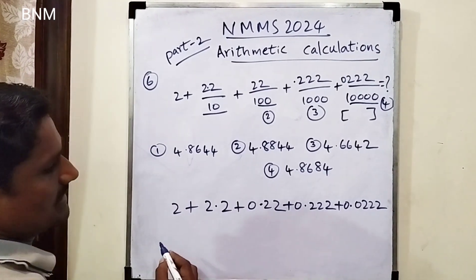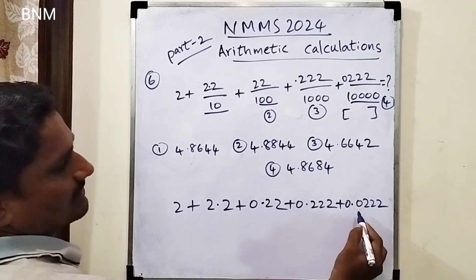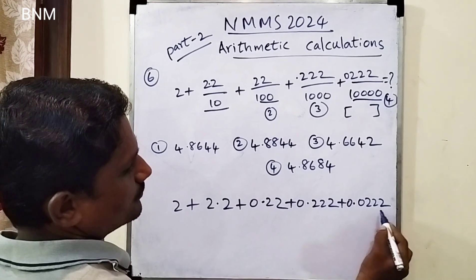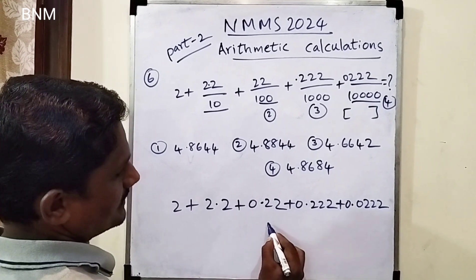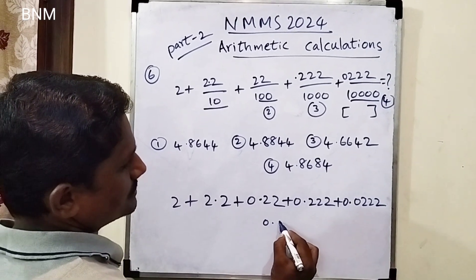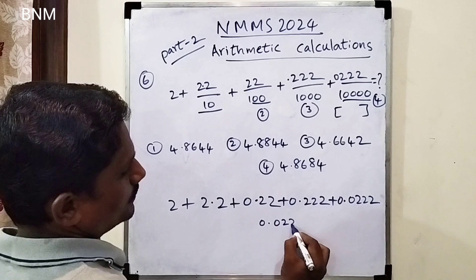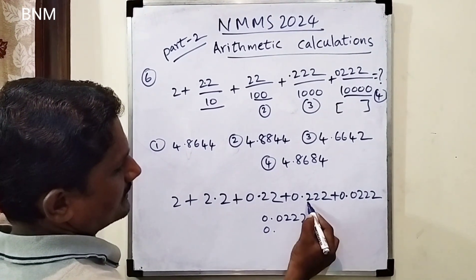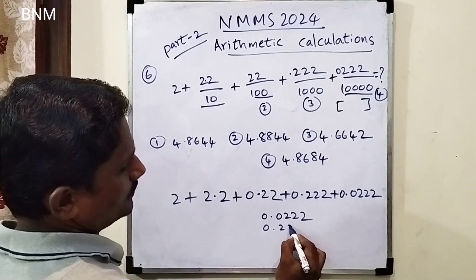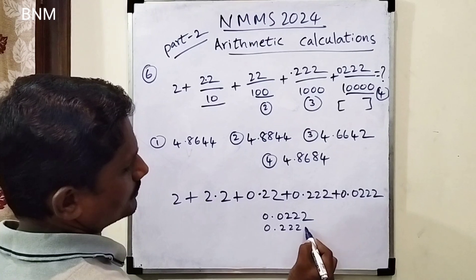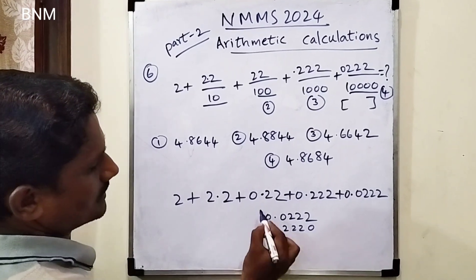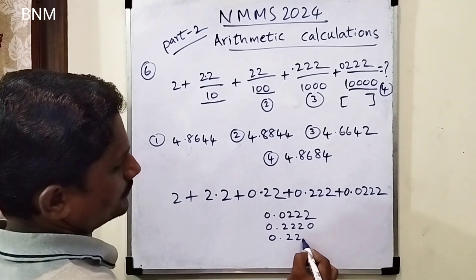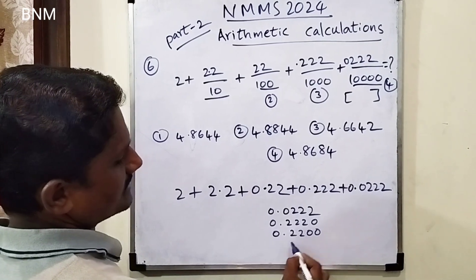Now, what do we have? The point is 0. Here n0 is 4 digits. Point is 0. We get 0.0222. Then 0.0 is 0, 2, 2, 2. Here n0 is 0. And we have 0.222.